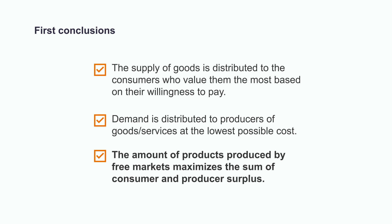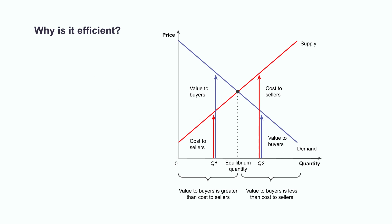Finally, the amount of products produced by free markets maximizes the sum of consumer and producer surplus. Look at this graph — the same graph used in the previous exercise, but now we look at the areas below the curves. The demand curve represents the value that all buyers have on headphones in Tunisia, given a certain price. At levels of quantity below the equilibrium, such as Q1, the value to the marginal buyer is greater than the cost to the marginal seller. Increasing production and consumption raises total surplus as a result. Until the quantity reaches the equilibrium level, this remains the case.